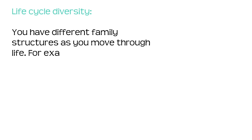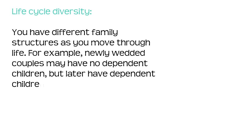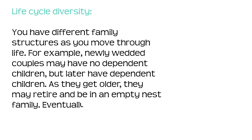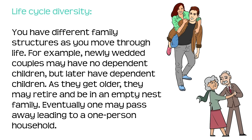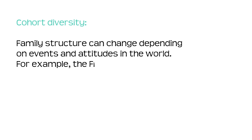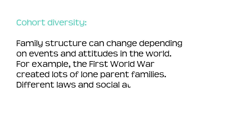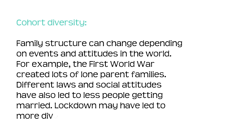Life cycle diversity: you have different family structures as you move through life. For example, newly wedded couples may have no dependent children but later have dependent children. As they get older, they may retire and may be in an empty nest family. Eventually, one may pass away, leading to a one-person household. Cohort diversity: family structure can change depending on events and attitudes in the world. For example, the First World War created lots of lone parent families. Different laws and social attitudes have also led to less people getting married. Lockdown may have led to more divorces.